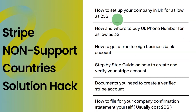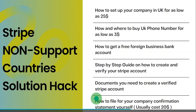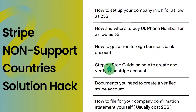As a start, it is a must for you to have a company to set up a valid Stripe account if you don't want to lose your money in the long run. I'm also going to teach you how and where you can buy a UK phone number for as low as $3 per month, how to get a free foreign bank account, a step-by-step guide on how to create a verified Stripe account, the documents you need, and how to file for your company confirmation statement, which usually costs $20.